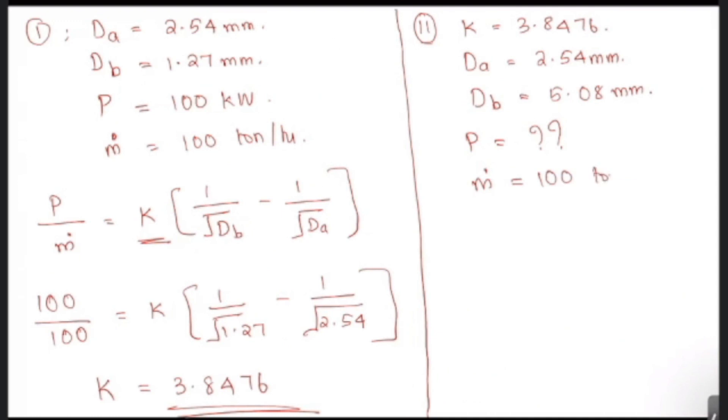So now in the second case, since we found out the constant K from the last case, using that constant and using these new diameters of the feed and the product as well as the mass flow rate, we need to find the power consumed. So again we use the same Bond's law: P by m dot is equal to K into 1 by root of Db minus 1 by root of Da.